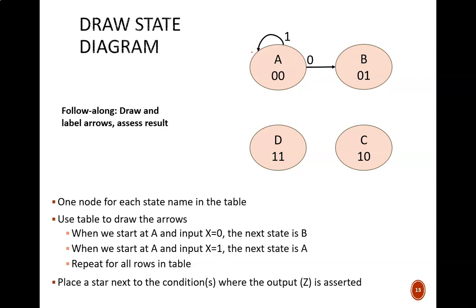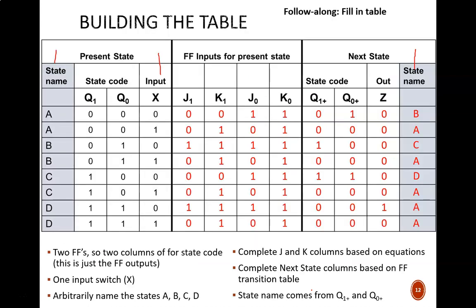My final state diagram looks like this. As a double check, I note that there were eight rows on the table and there are eight arrows on the diagram. These counts should always match. What is this star doing here? That is what I'm using to indicate the special case where the output is asserted. The table tells us that Z equals 1 only when leaving state D with an input of 0. And that's exactly where the star goes.